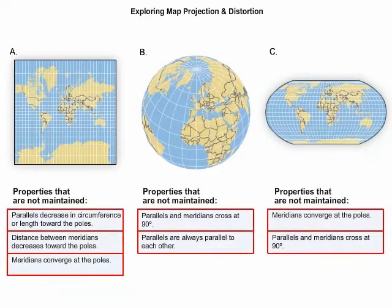While each map projection is able to depict some properties correctly, none of them are able to maintain all properties of the graticule. As you can see, since the graticule is changed when it is projected, all maps are distorted.